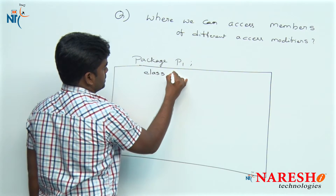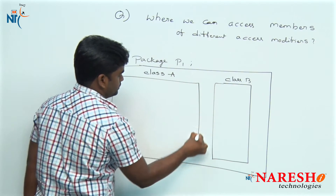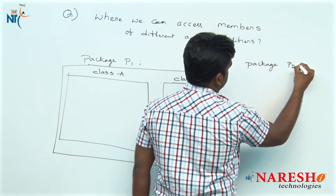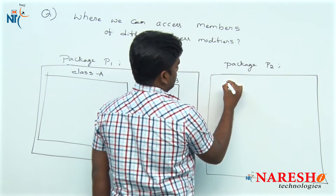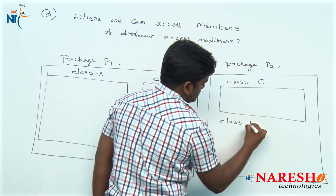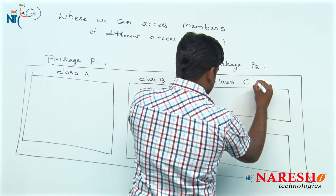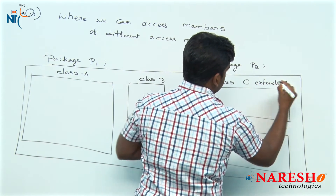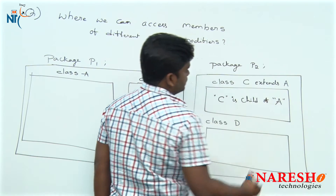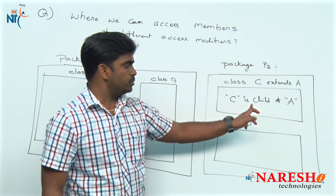In package P1 we are writing two classes: class A and class B. We are also taking one more package, P2, and in package P2 we are also writing two classes: class C and class D. There is a parent-child relationship between class A and class C — class C is extending class A, so C is the child of A.